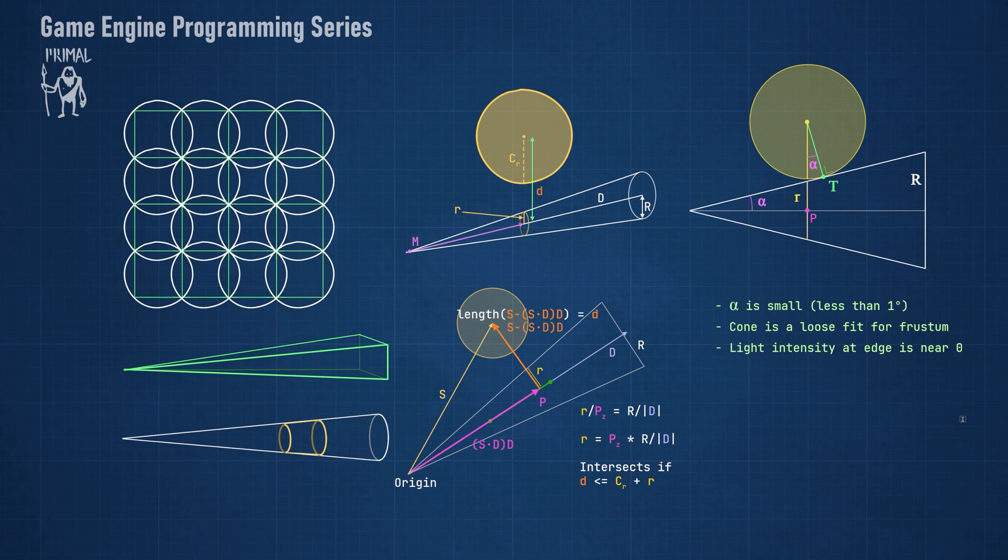And even for this corner case, pun totally intended, if the intersection would just fail, it would hardly be noticeable because it happens at the very limits of the lights range where the intensity is near zero.